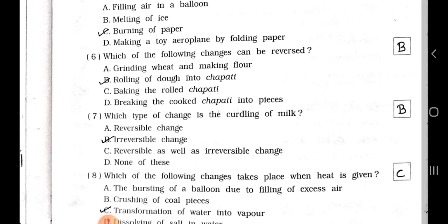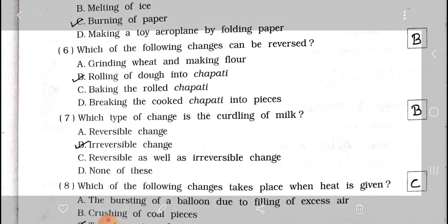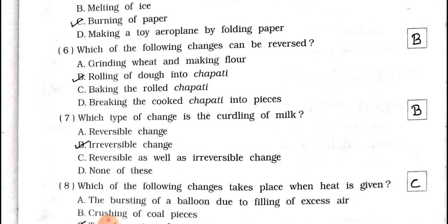Number 6. Which of the following changes can be reversed? A grinding wheat and making flour, B rolling the dough into chapati, C making the rolled chapati, D breaking the cooked chapati into pieces. Answer is option B, rolling of dough into chapati.